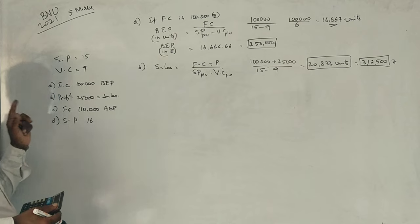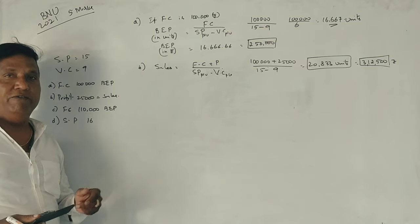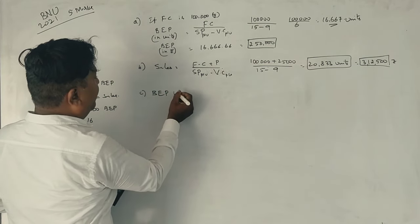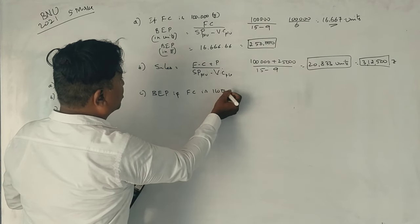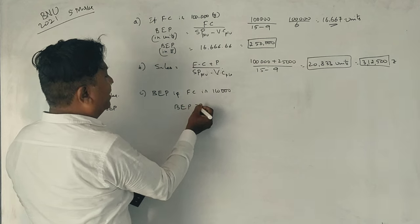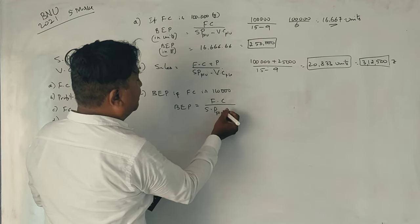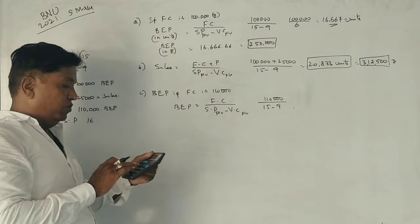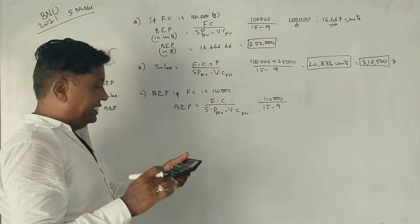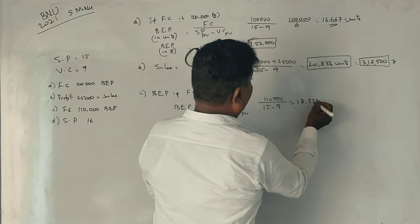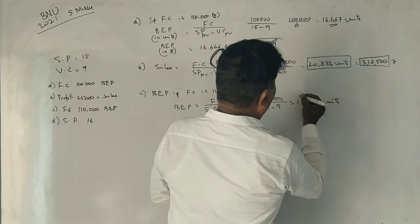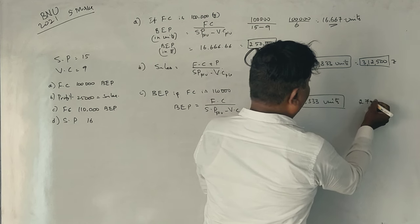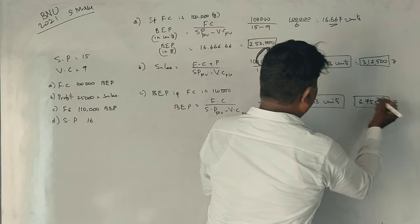Here is another question: fixed cost is 1,10,000 rupees. Break-even point is: fixed cost divided by selling price per unit minus variable cost per unit. So, 1,10,000 divided by 15 minus 9, which is 1,10,000 divided by 6, equals 18,333.33 units. Multiplied by 15 rupees, we get 2,75,000 rupees. This gives the break-even point in both units and rupees.